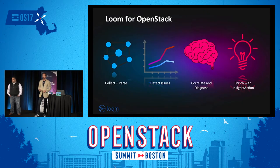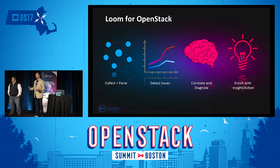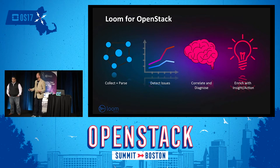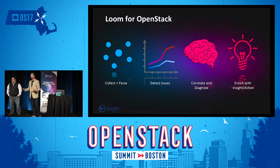Very quickly, what Loom Systems does is AI log analysis. The difficulty with OpenStack deployments — I'll put it in the words of someone I was speaking with two days ago: in OpenStack, the number of combinations and permutations of problems is endless. Traditional monitoring does not work. You can't tell a monitoring tool to look for something in particular and then tell you when that happens, because there are too many things that could go wrong.